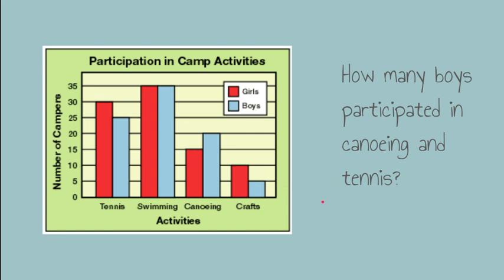How many boys participated in canoeing and tennis? If I look at this graph, I see canoeing and tennis. But I was asked just for boys, so I'll look over at boys. Here we've got 25 and 20. So I do 25 plus 20, which is 45.